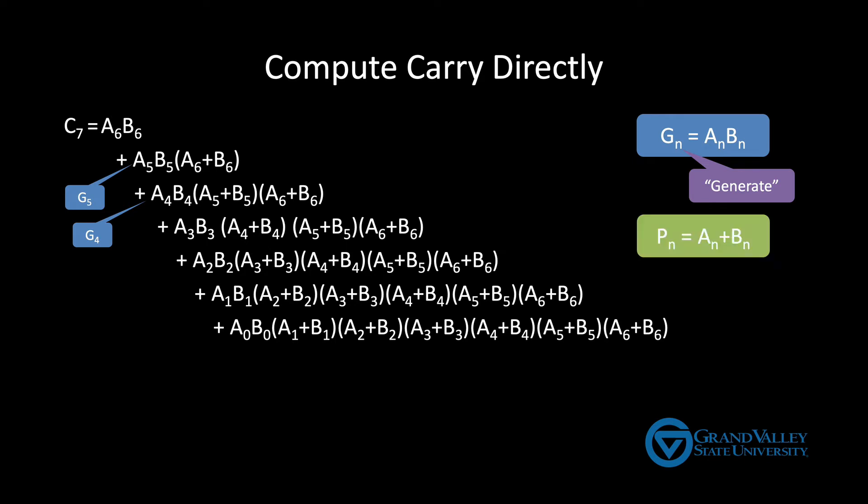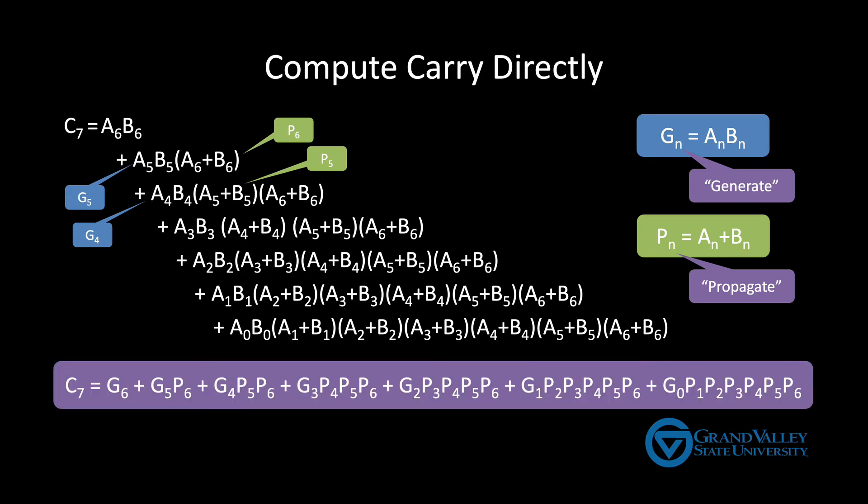Similarly, we'll define P sub n to be a sub n or b sub n. In this case, P stands for propagate. When either a n or b n is true, it means that column is propagating a carry. So we can further clean up this formula by replacing, for example, a six b six with P six and replace a five b five with P five and so on. When we make all of these substitutions, our formula is still long, but it's much more manageable.